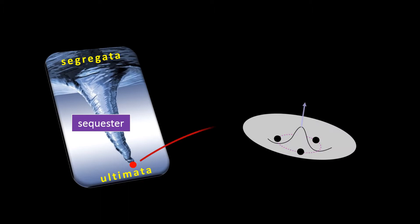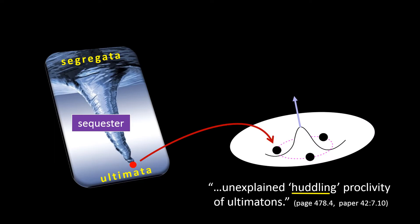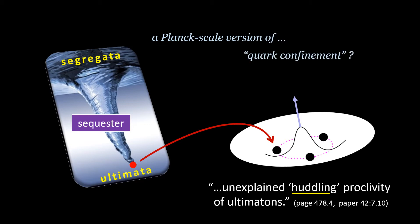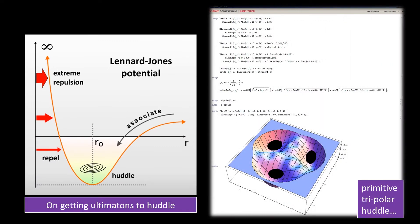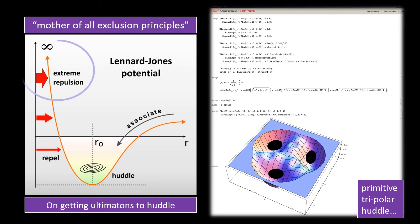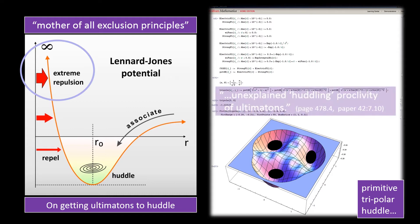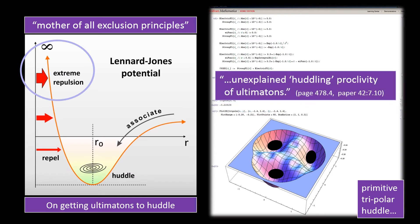But before these ultimatons can be put to work, first they need to, quote, huddle. By huddling, I imagine something like this: two or three ultimatons locked very, very tight — a bit like the way quarks are confined inside protons. Mathematically, we'd have a balance of forces: mutual attraction drawing a few ultimatons together, while some extreme repulsion, say from an anti-symmetric spin, keeps them apart. It's this balance between mutual attraction and extreme repulsion that explains that quote 'proclivity to huddle' mentioned in paper 42, section 7.